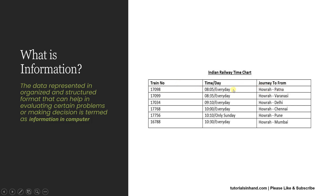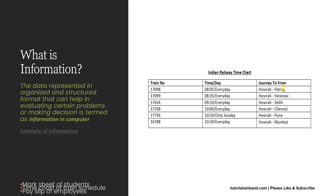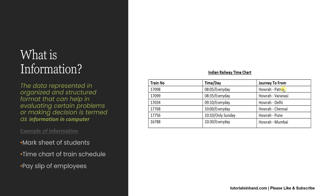If you see this chart, this train number is one data, the time and day was a data, and the journey to and from was a data. But when they are well connected together and structured in this format, it becomes helpful information. We can understand that train number 17098 will leave every day at 8:05 AM from Howrah to Patna. This is where it becomes really helpful — this is one example of information.